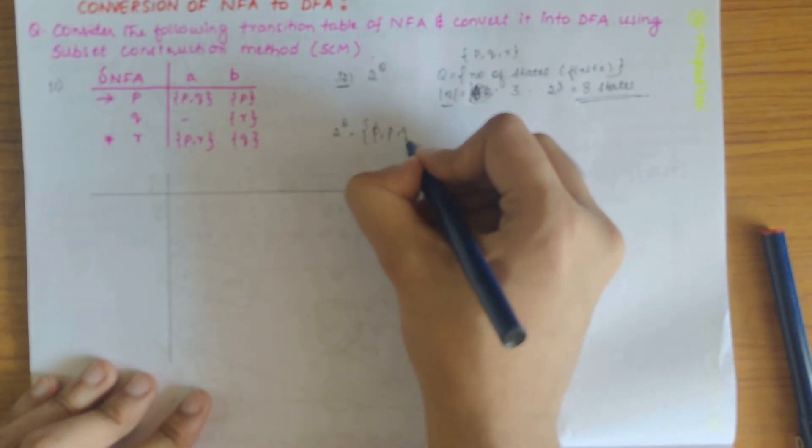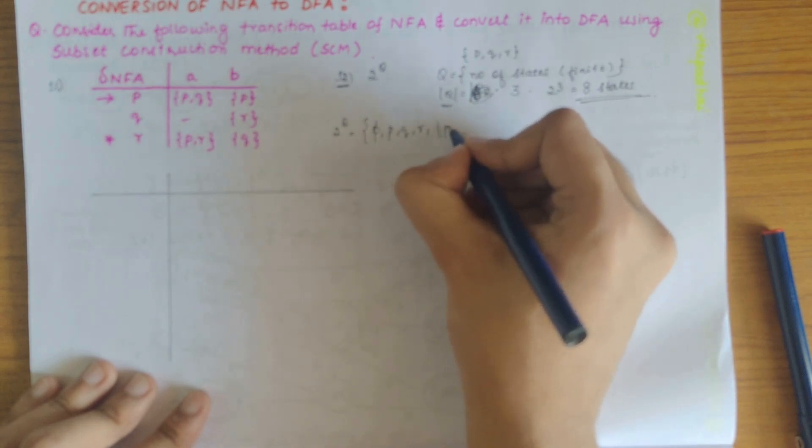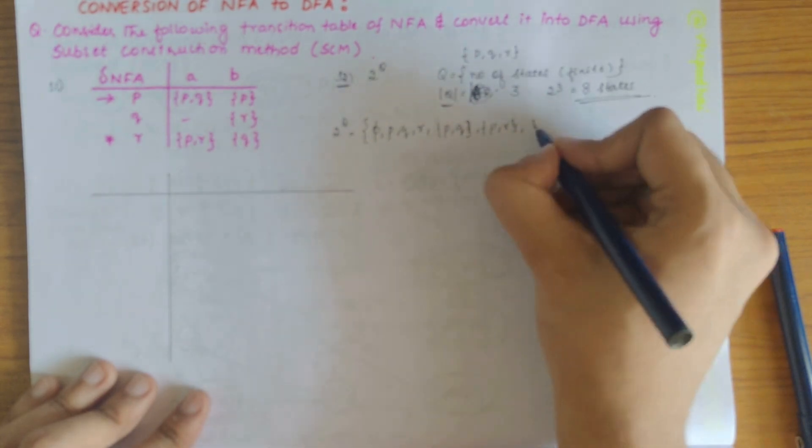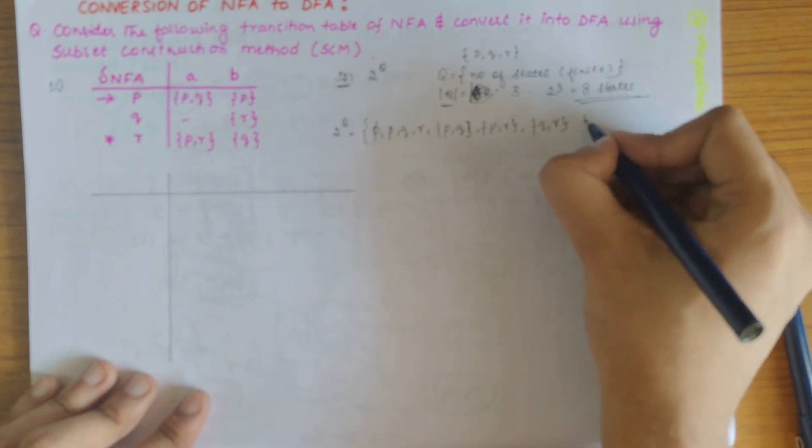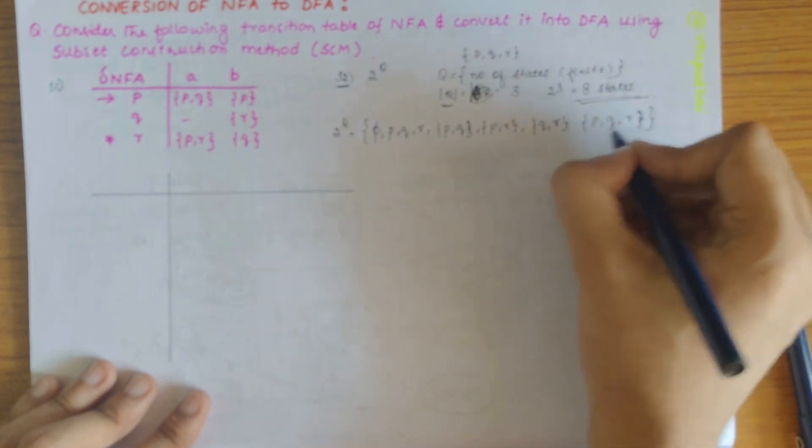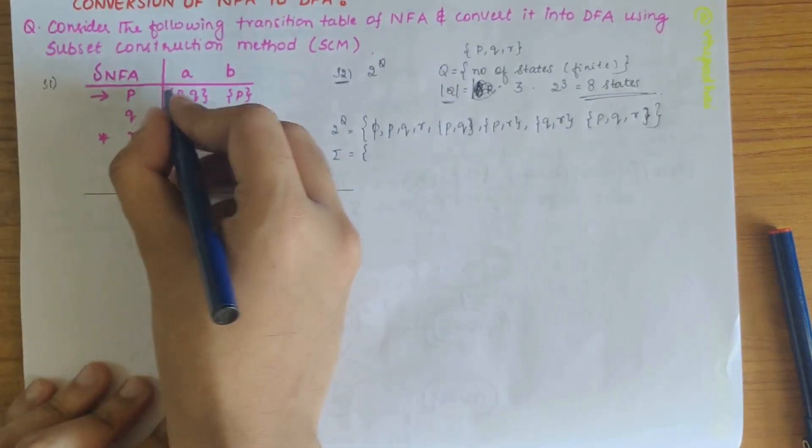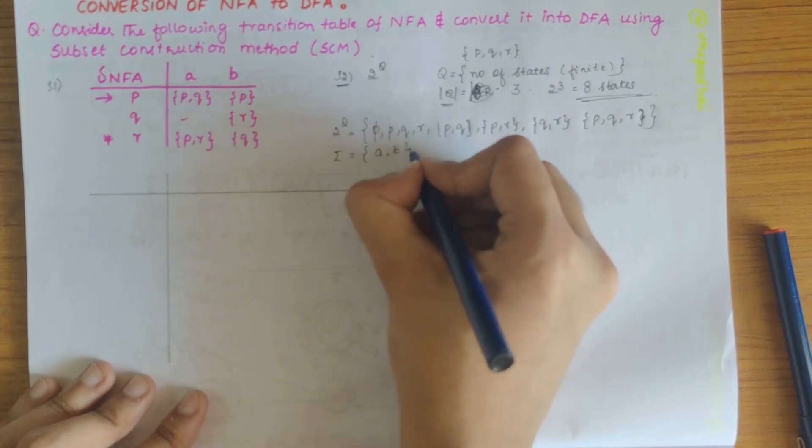It could be null state, p, q, r, followed by p and q, pr, qr, and pqr. So here we know the sigma values that is the alphabets or strings used here, those are a and b.